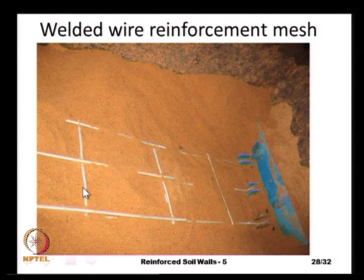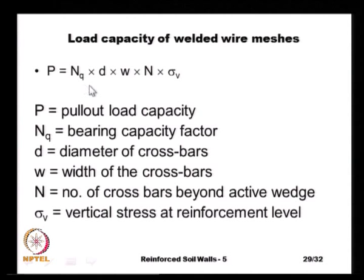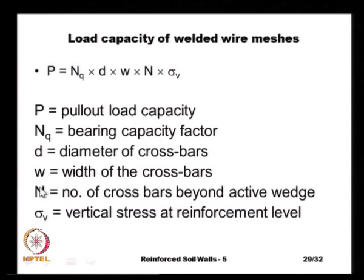For geogrids and welded wire meshes, the pullout capacity includes friction along the surface plus passive resistance of the cross members. For welded wire meshes, the pullout capacity is estimated as N_q × D × W × N × sigma_V, where N_q is the bearing capacity factor, D is the diameter of the cross bars, W is the width of the cross bars, N is the number of cross bars beyond the active wedge within the stable soil zone, and sigma_V is the vertical stress at the reinforcement level.